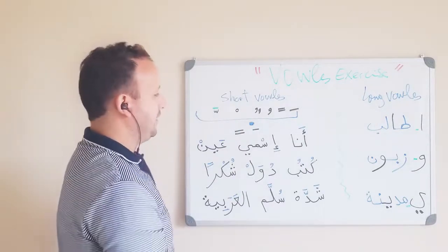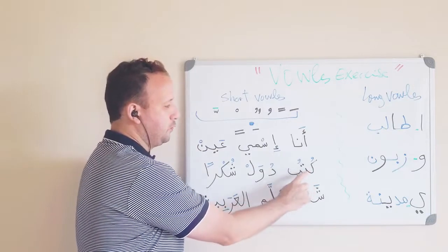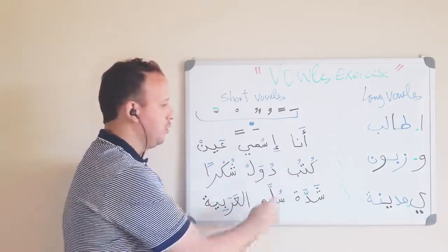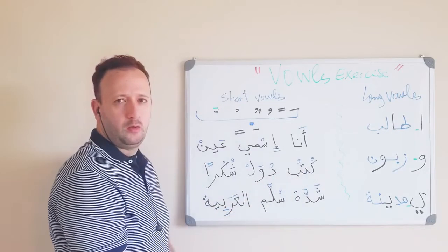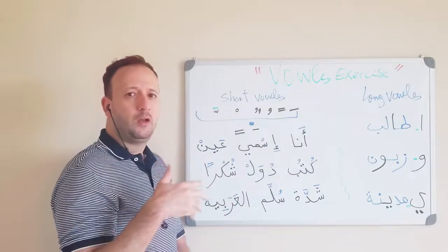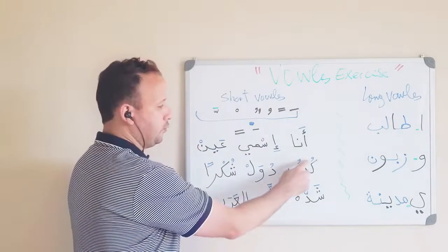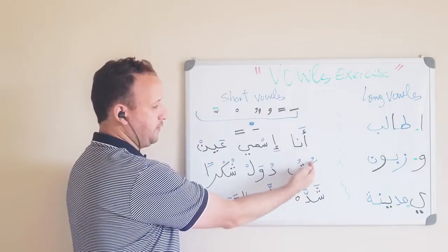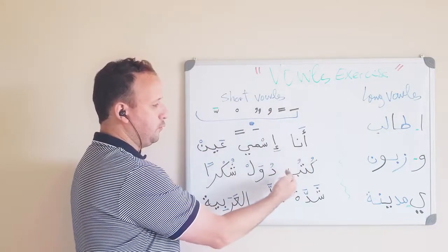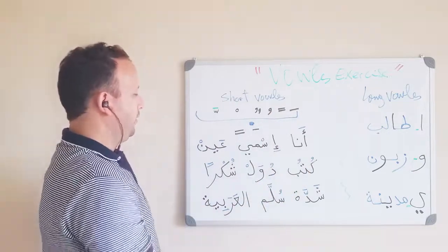This word, next word is kutub. Kutub. Kitab wahid, kutub. So kutub, this is K. So it's damma. So kutub. Kutub, books.